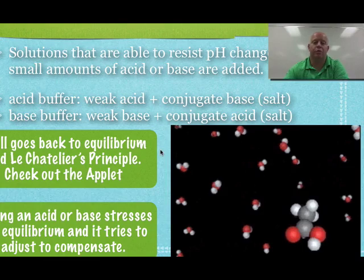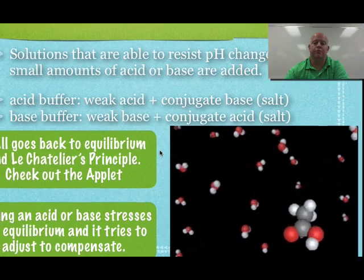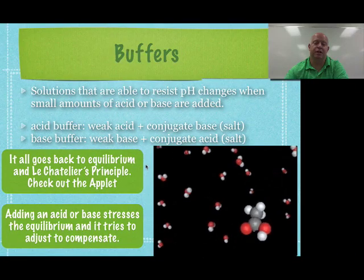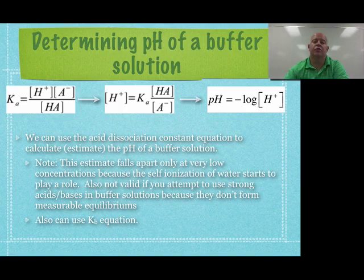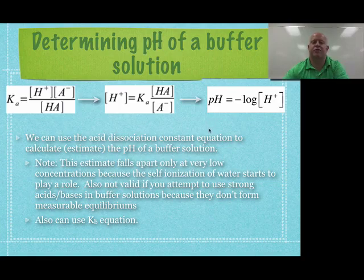Working with buffers is an important part of chemistry — if you need to run a reaction at a very specific pH you need to make a buffer solution. There is a way to mathematically solve for the right pH of a buffer solution. The equation I'm showing is a simplified version of the Henderson-Hasselbalch equation, which is a little more complex and works in all conditions. This simplified version works for most cases but falls apart at very low concentrations where self-ionization of water plays a role.